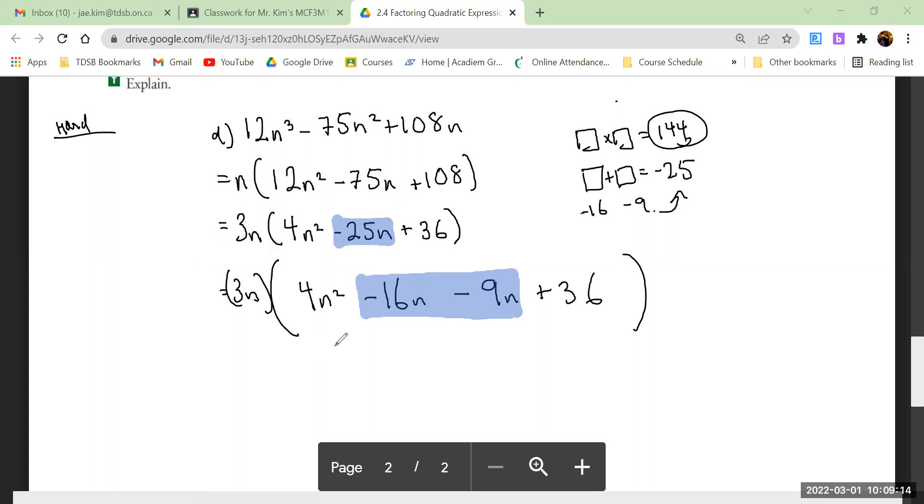What's step 3? If you don't remember, look at your sheet. You put the first two in brackets, the last two in brackets, and separate it with a plus. (4n² - 16n) + (-9n + 36). Common factor.